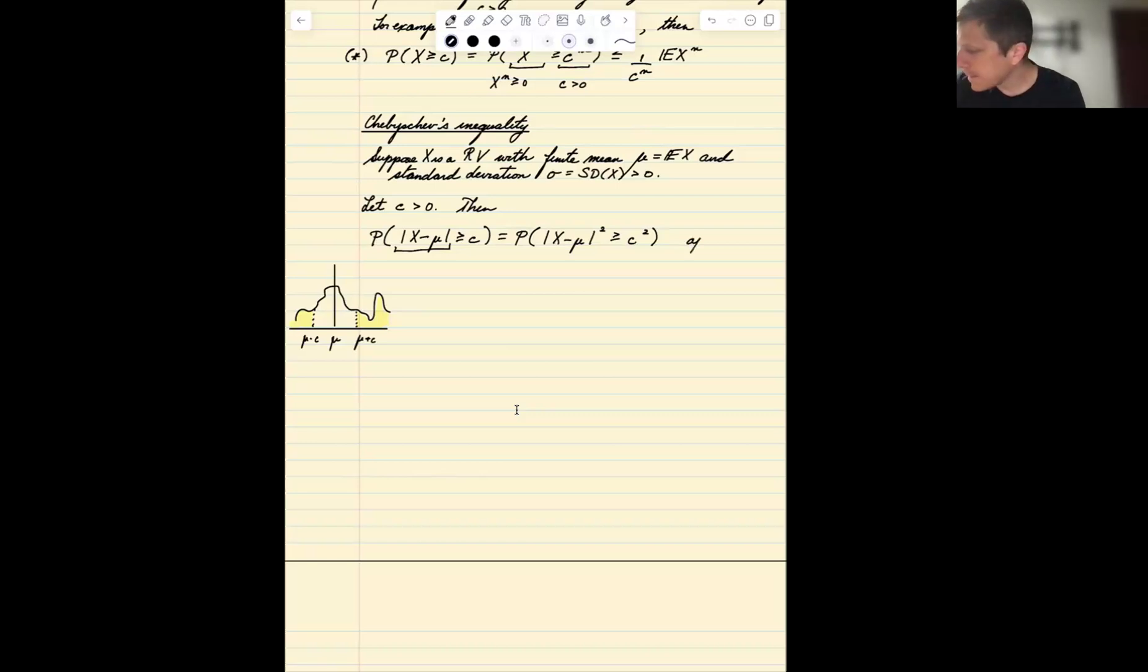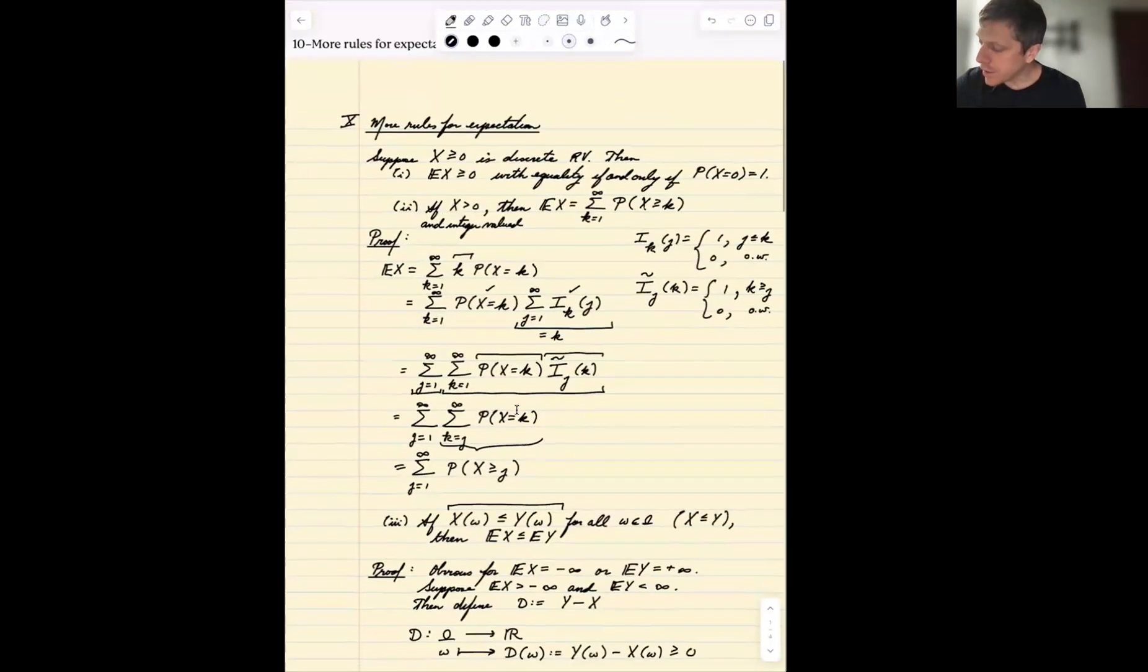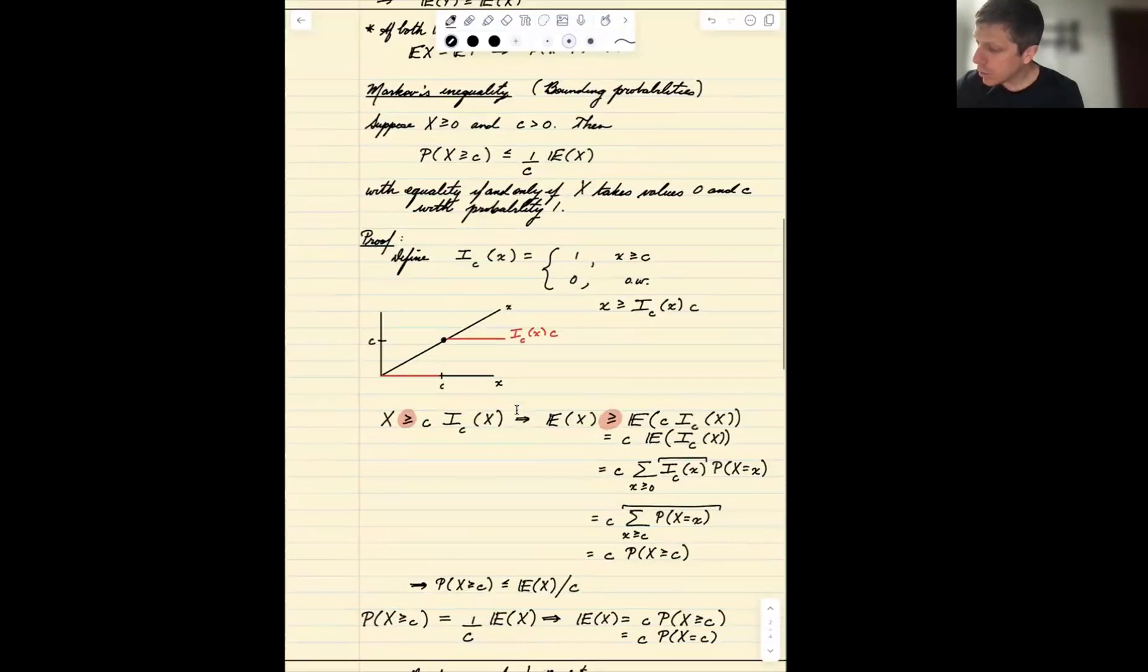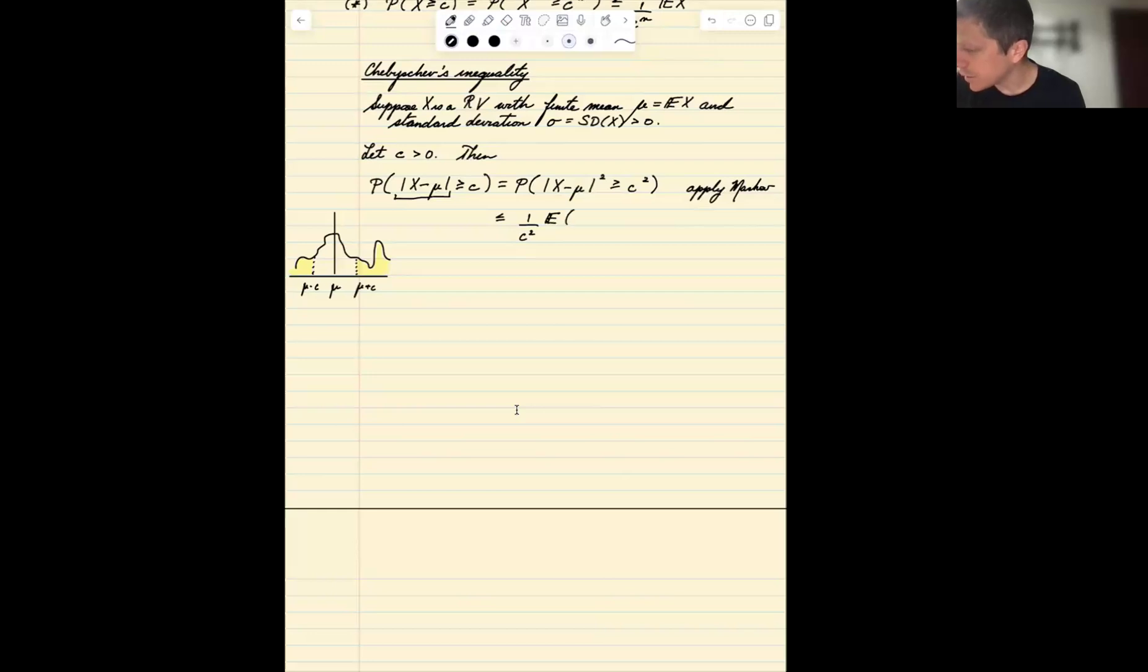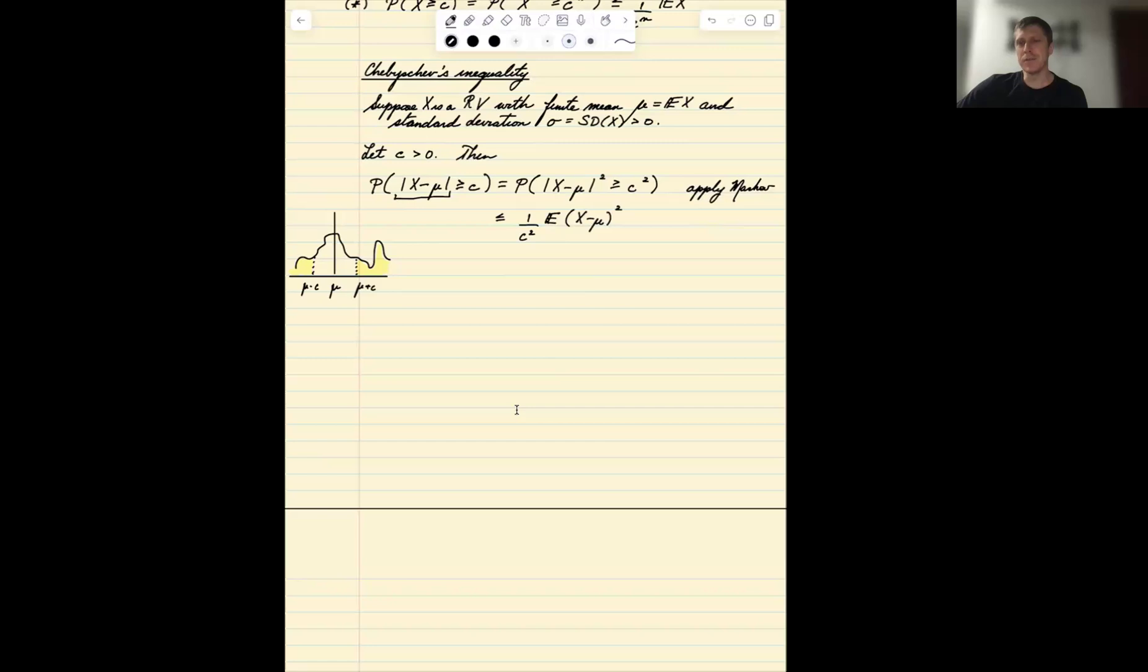So if I square both sides, now I can apply Markov. And Markov's inequality says this is less than or equal to one over the constant times the expectation of the random variable. Well, the constant is c squared now. And the random variable is x minus mu squared. It's absolute value of x minus mu squared, but absolute value squared is the same as just the random variable squared. Well, what's the expectation of x minus mu squared? That's the definition of variance. So it's the standard deviation squared, or just the variance, divided by c squared.